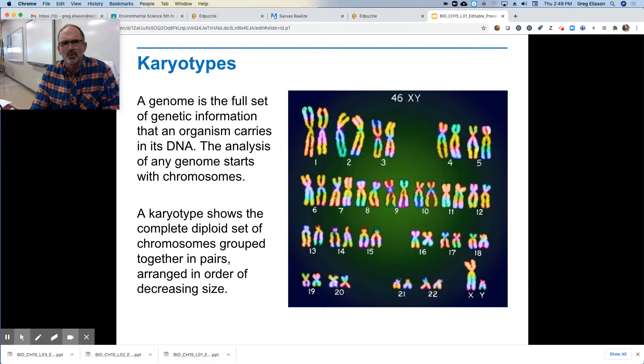All right, so what's a karyotype? A karyotype is an actual picture of a full set of chromosomes. The genome is the full set of genetic information that an organism carries in its DNA.